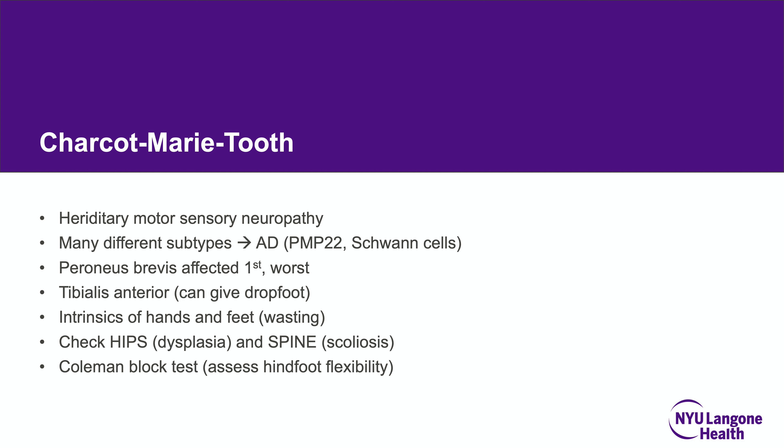Charcot-Marie-Tooth is a hereditary motor sensory neuropathy with many subtypes. The most common is autosomal dominant on the PMP22 gene, affecting Schwann cells. The peroneus brevis is affected first and worst. The tibialis anterior is also affected, leading to drop foot and perpetuating equinus contracture. There is marked wasting of intrinsic muscles of the feet and hands — always check the hands. Obtain an AP pelvis x-ray as there is high risk of dysplasia, especially in type 1, and monitor the spine for scoliosis.